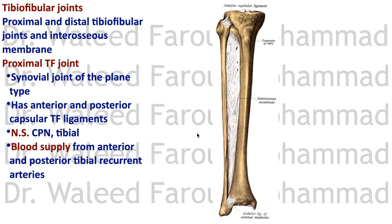The tibiofibular joints, like the radius and ulna, exist in three sites: the superior tibiofibular joint, the inferior tibiofibular joint, and the interosseous membrane as a joint. The superior tibiofibular joint is a plain synovial joint with anterior and posterior tibiofibular ligaments. Its nerve supply is by the anterior and posterior tibial recurrent arteries, branches of the tibial artery.